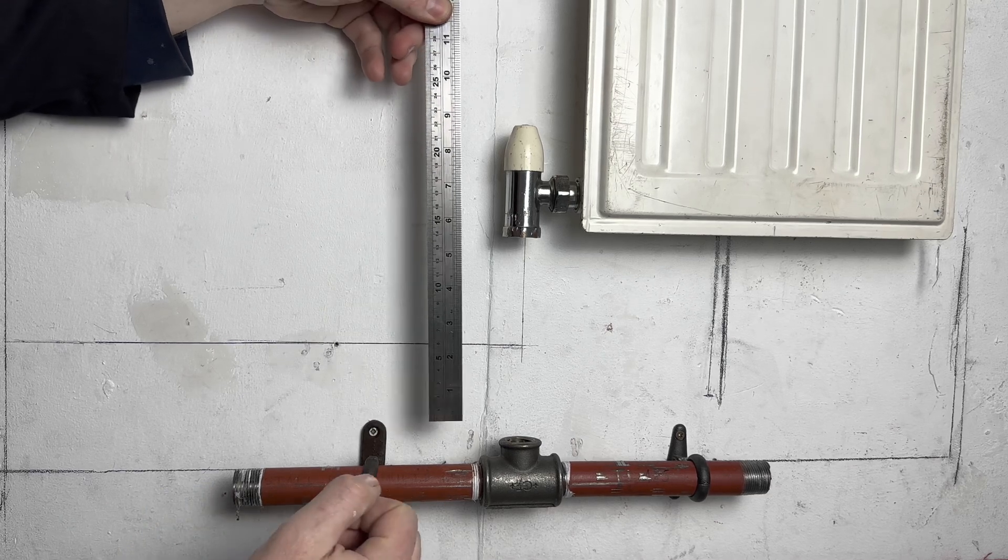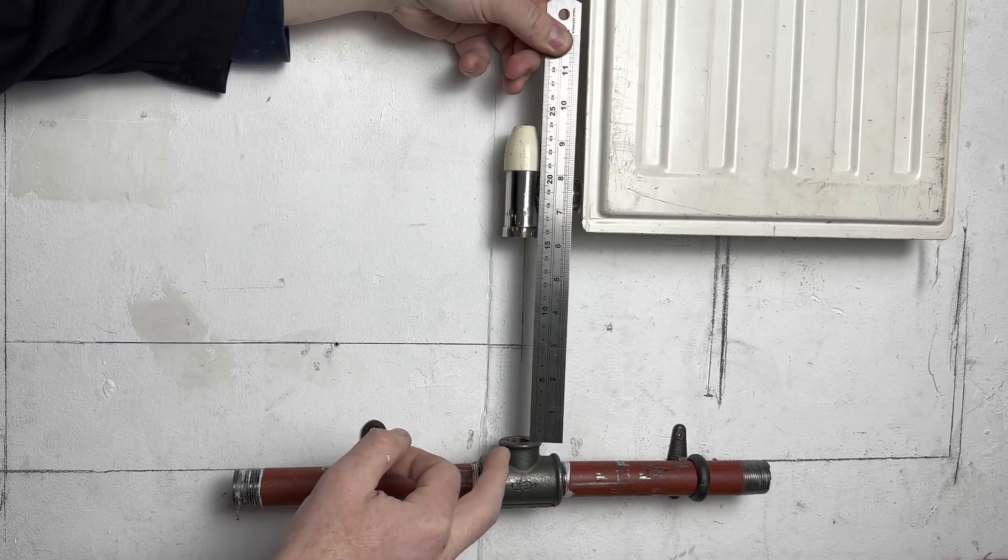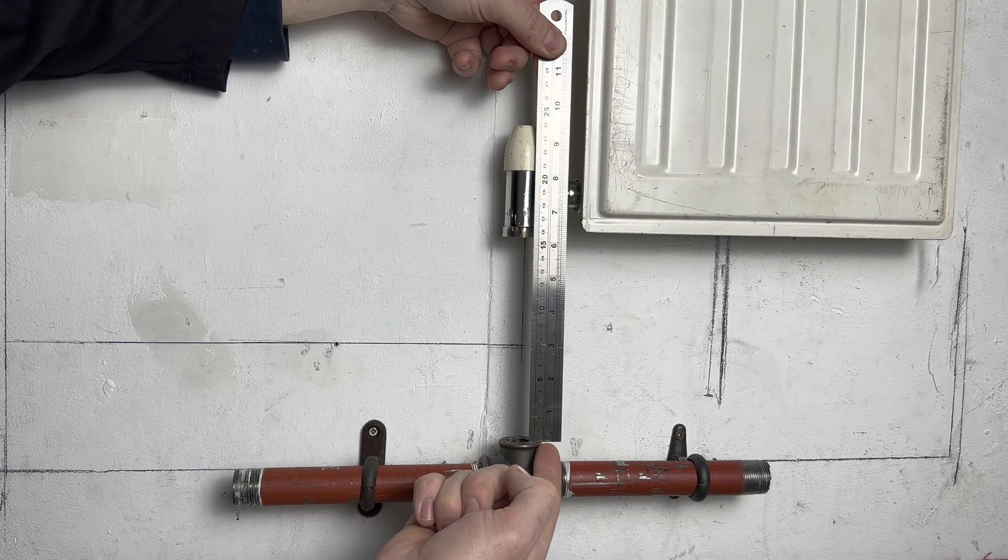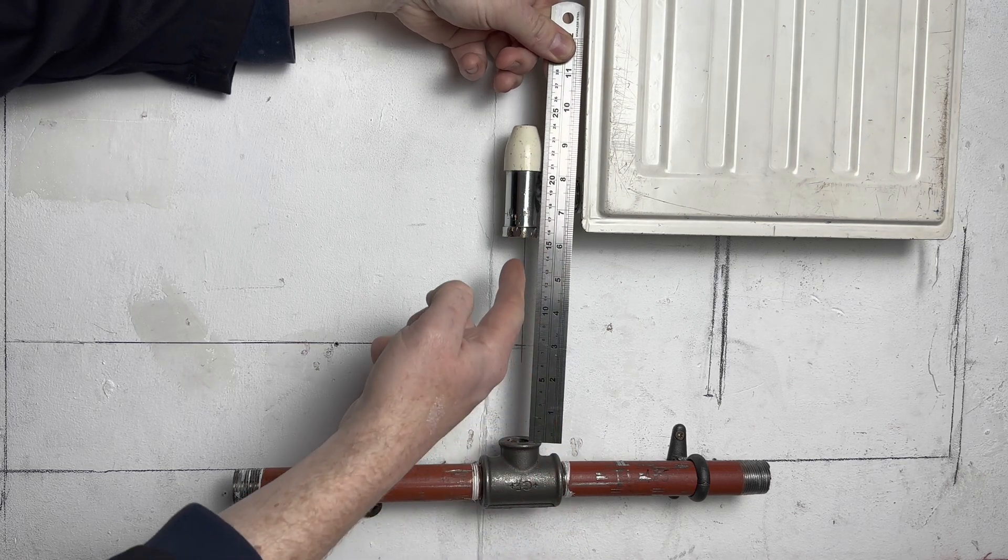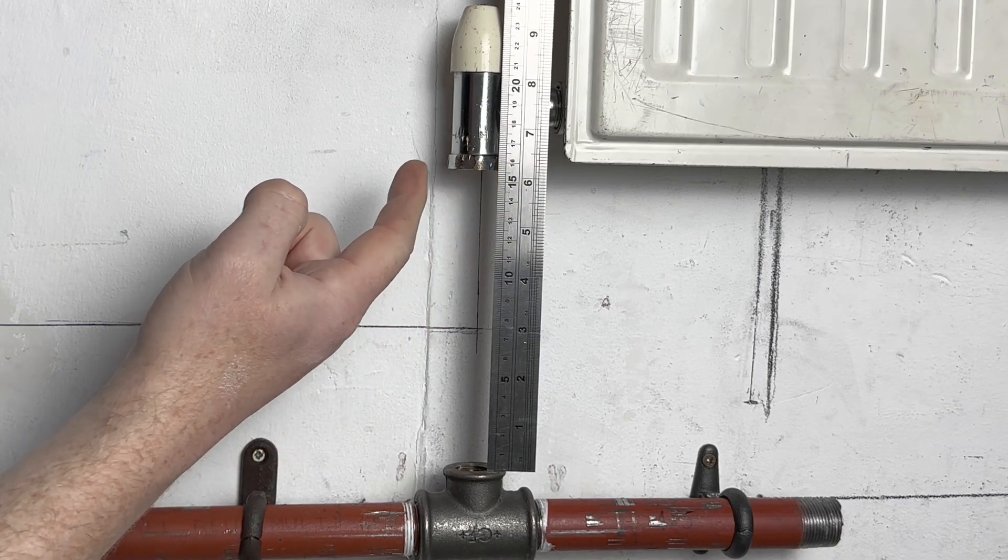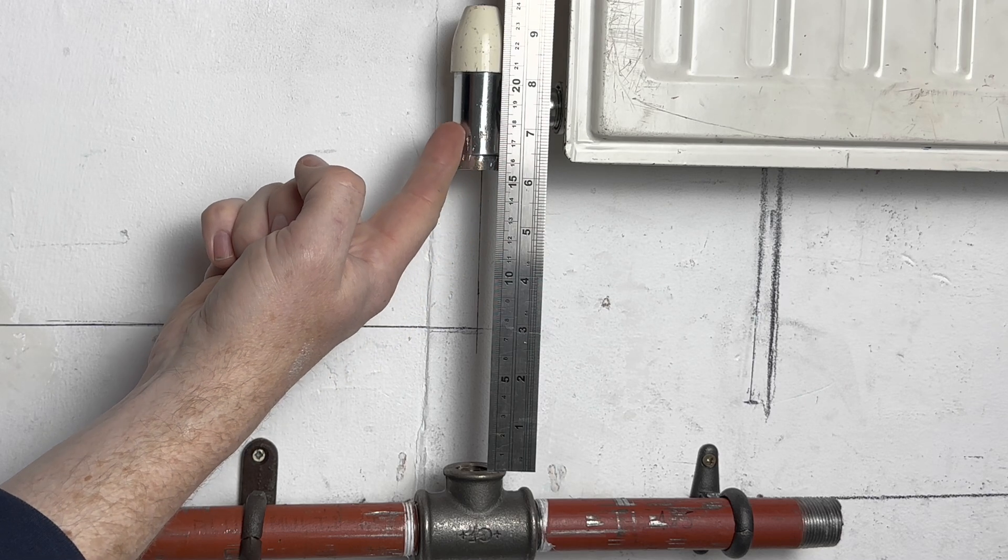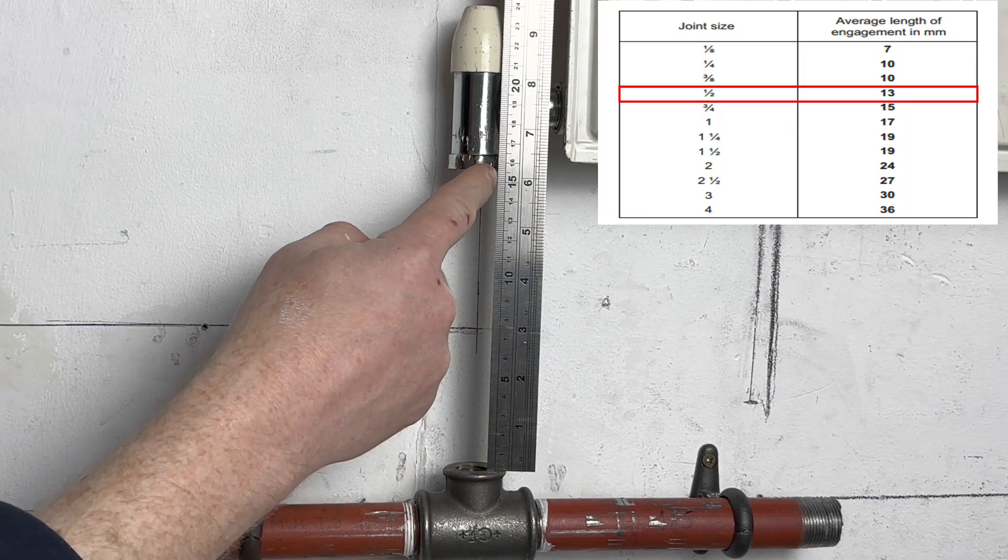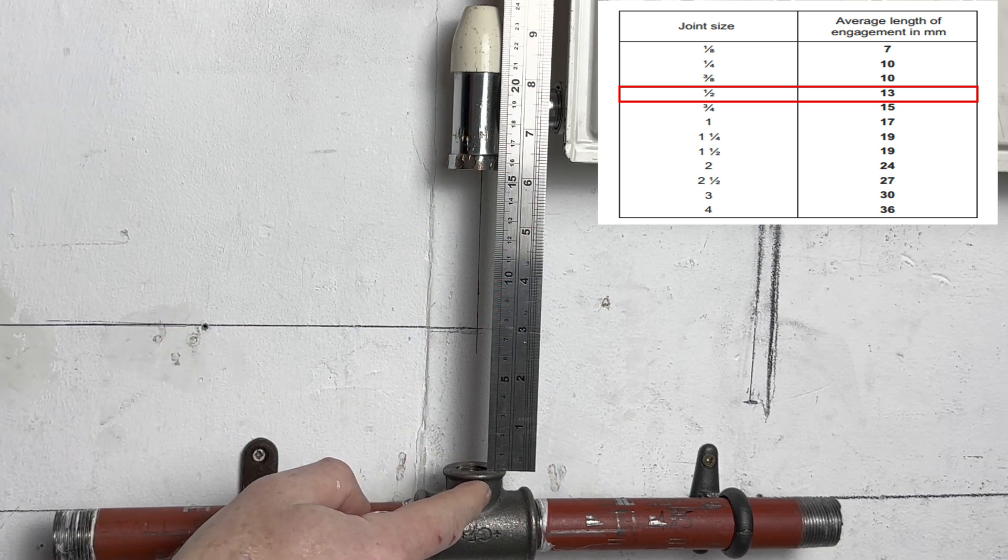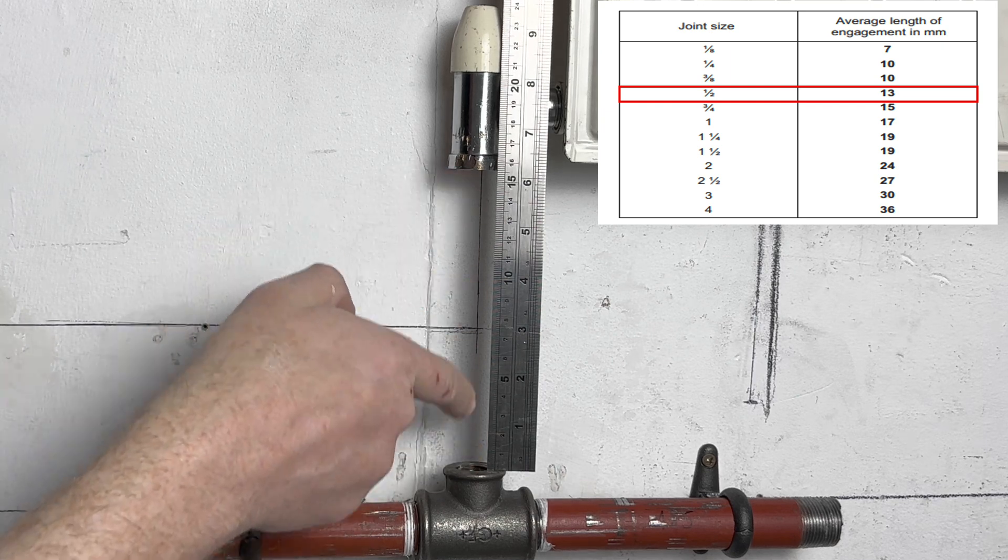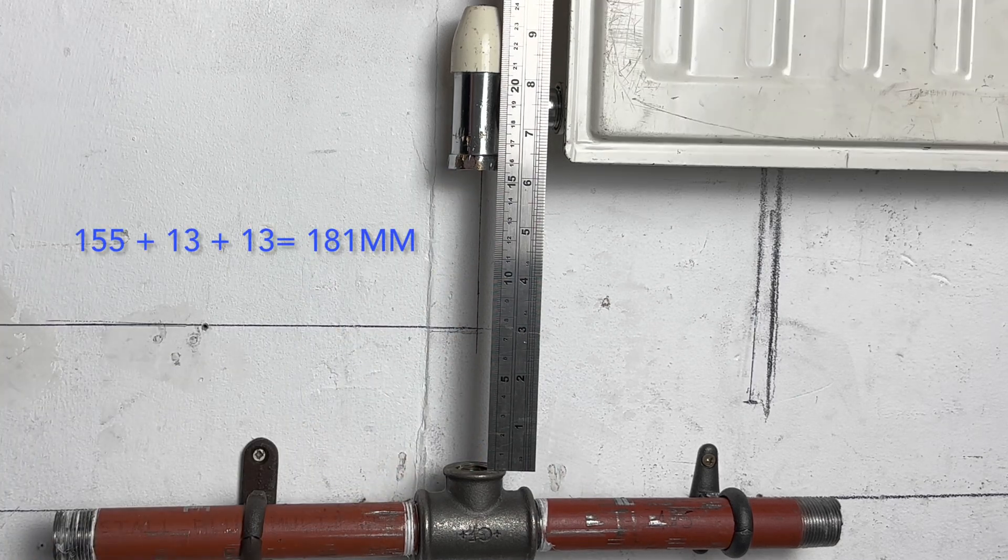Another way to work out the pipe size without using the Z dimension, measure from the end of the fitting to the end of the fitting, which is 155mm. As we know that the pipe is inserted 13mm into each fitting, so 155mm plus 13mm plus 13mm will give us 181mm.